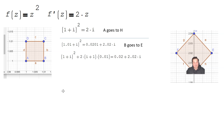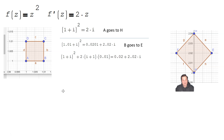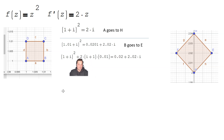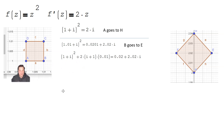So in other words, 1 plus i squared is just point h on the right side. Multiplying 0.01 — that little segment above my head on the left — by the derivative, which is 2 times i plus 1, has to both stretch that differential and rotate it. That's what the complex derivative is doing: some kind of stretch and rotation.